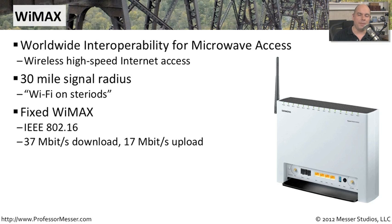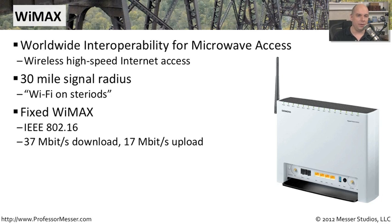With fixed WiMAX — meaning you're sitting in one place receiving a signal with your antenna — this uses a standard called IEEE 802.16. The existing throughputs for this are about 37 megabits per second download and 17 megabits per second on upload.